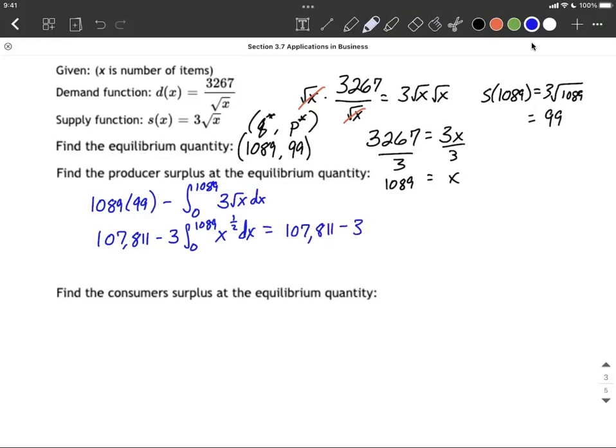Now as we integrate, we're going to increase the exponent by 1, so we have one-half plus 1, or one-half plus two-halves makes three-halves, and because it's a fractional exponent, instead of dividing by three-halves, I'm going to go ahead and multiply by its reciprocal, two-thirds. Now this still gets evaluated between 0 and 1089.